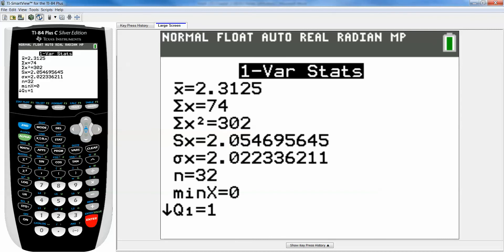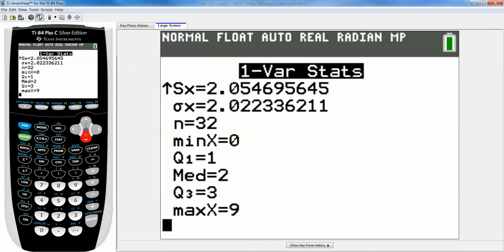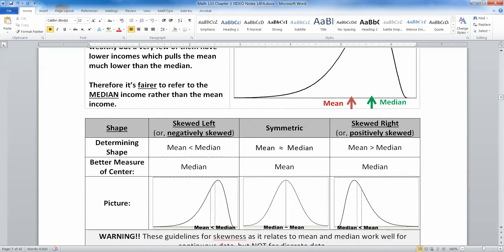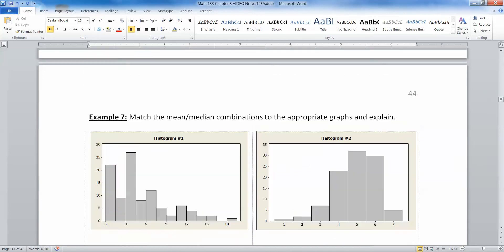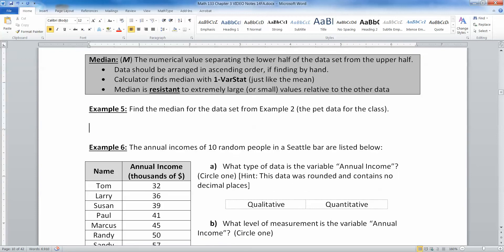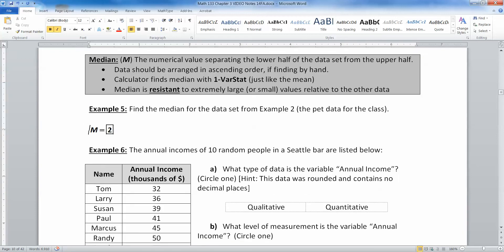Now the mean is right up here 2.3125 and we have a whole bunch of other stuff that we'll use through the rest of chapter 3. But close to the bottom, M-E-D, that's 2. That's the median. So the calculator finds it for you. Let's scroll down here and put that value in. Some people write M-E-D, some people will just write out the word median. It's 2.